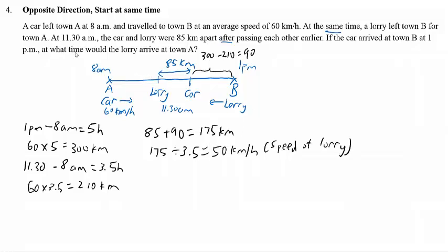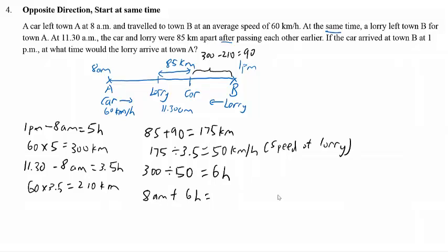Question 1 asks for the time for the lorry to reach Town A. To find the total time for the lorry, we take the total distance between A and B divided by the speed of the lorry. You get 6 hours. That means the lorry takes 6 hours to travel from B to A. To find the arrival time, take 8 AM plus 6 hours, and you will get 2 PM.